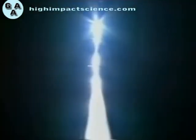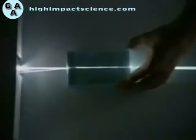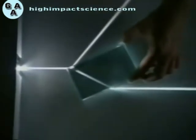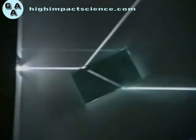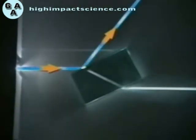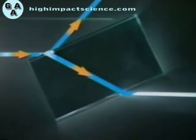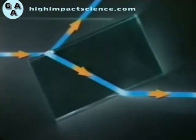Shining a powerful light source through a thin slit produces a straight narrow beam. Place a glass block in its path and the beam starts to behave differently as the block is rotated. Some of the light is reflected; some passes into the glass. The light bends in one direction as it enters the block and in the other as it leaves. This bending of light is due to the change in speed of the light waves as it enters and leaves the glass at an angle.